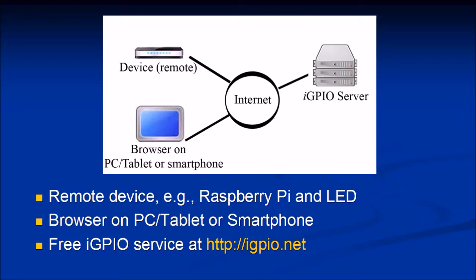The system works as follows. There's an IGPIO server attached, which may be communicated with by either a browser from a PC, tablet, or smartphone via the internet, and a remote device. The remote device may have a GPIO interface, which can be remotely controlled via the IGPIO server. We're going to show you a simple example of how you can use a Raspberry Pi connected to an LED to turn that LED on or off using your browser remotely.